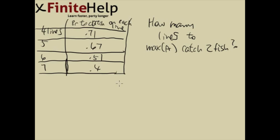Here's the fishing line problem that probably everyone will get in 3.5 webwork. You are given 4, 5, 6, 7 lines with their probability to catch on each line. And then you are asked how many lines to maximize the probability of catching at least two fish.